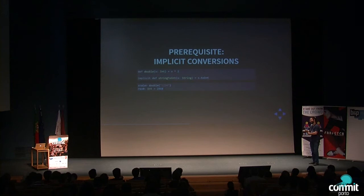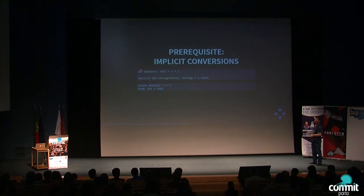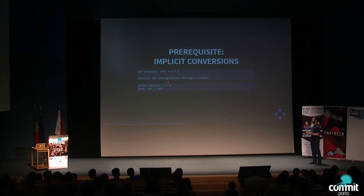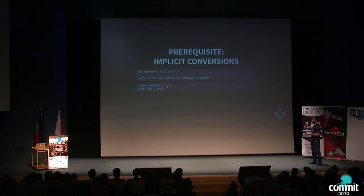This is even more powerful because it allows implicit type conversions at compile time. Imagine a function `double` of type V that multiplies a number by two, and you try to call it with a string — it shouldn't compile. However, if you supply an implicit conversion from String to Int, the compiler does the conversion before the function call, supplies the converted type to `double`, and returns the appropriate result.